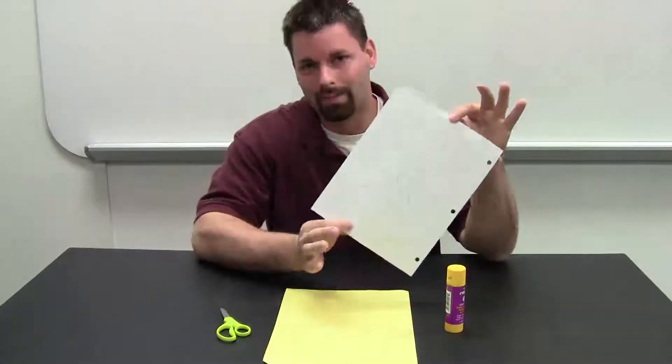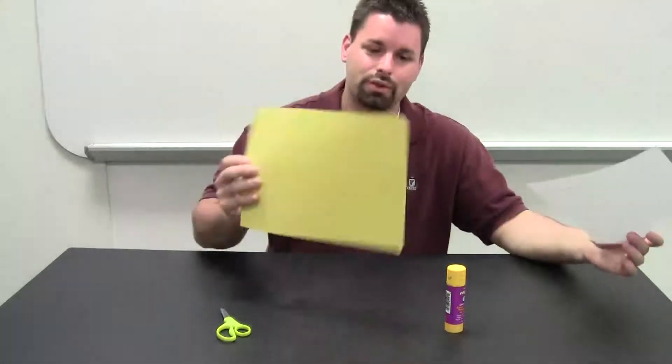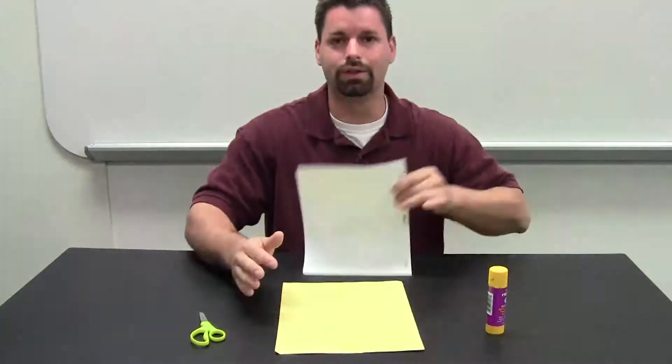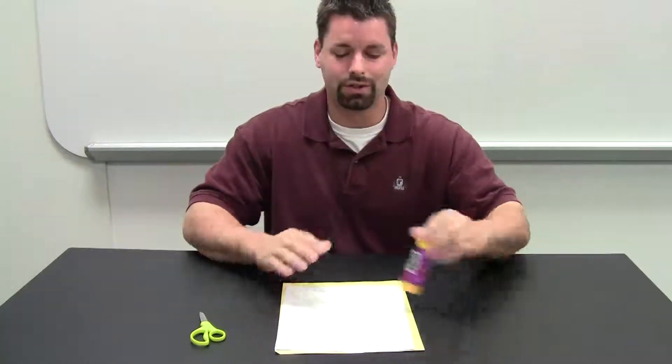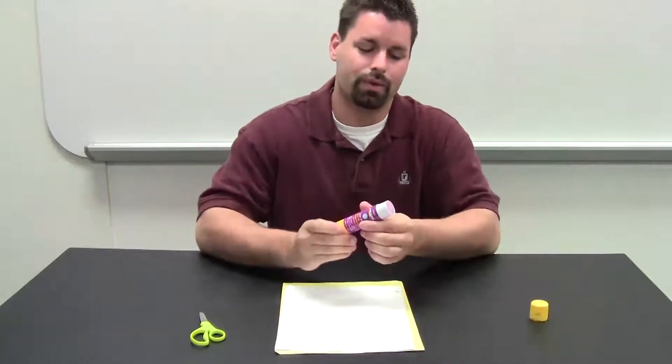So you have this template and that's what you'll have. You'll have a piece of construction paper, scissors and a glue stick. And the easiest way to do this is to flip your template over and just coat it nicely with some glue.